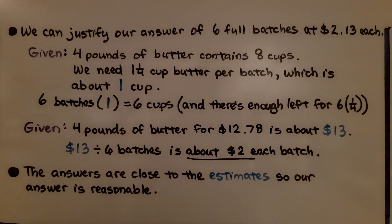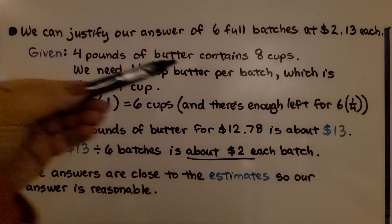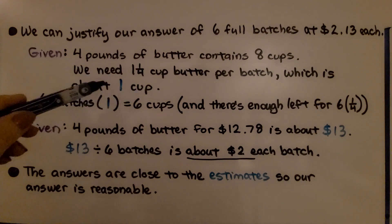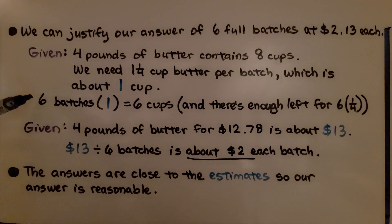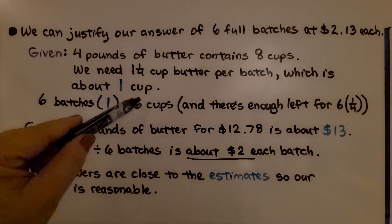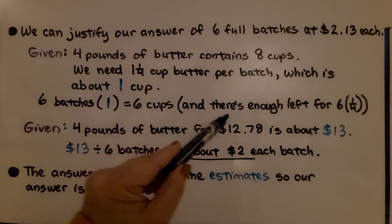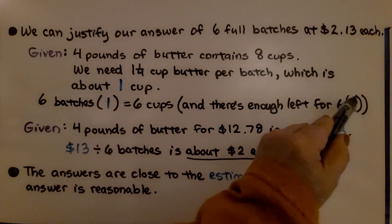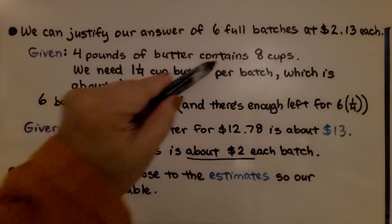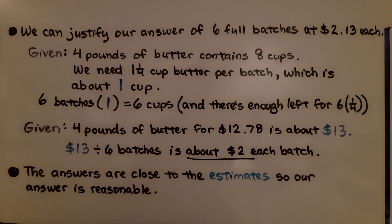We can justify our answer of 6 full batches at $2.13 each. It was given that there were 4 pounds of butter that contains 8 cups. We need 1 and 1/4 cup butter per batch, which is about 1 cup. We have 6 batches times about 1 cup would be 6 cups of butter. There's enough left over for the 1/4s. We need 6 one-fourths, so there's enough left over between the 6 cups and 8 cups for those little fractional parts.